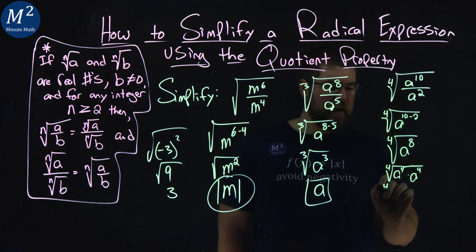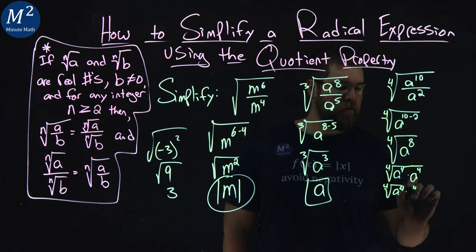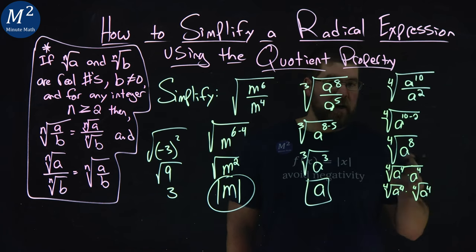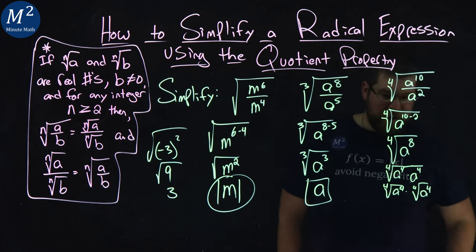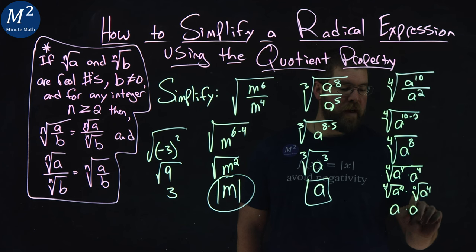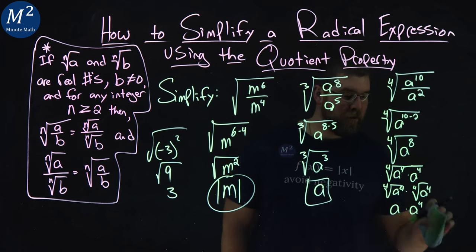Fourth root of a to the fourth times fourth root of a to the fourth power. Each one individually gives us an a value, right? Fourth root of a to the fourth is a. Fourth root of a to the fourth is a. Oh, not a to the fourth, just a.